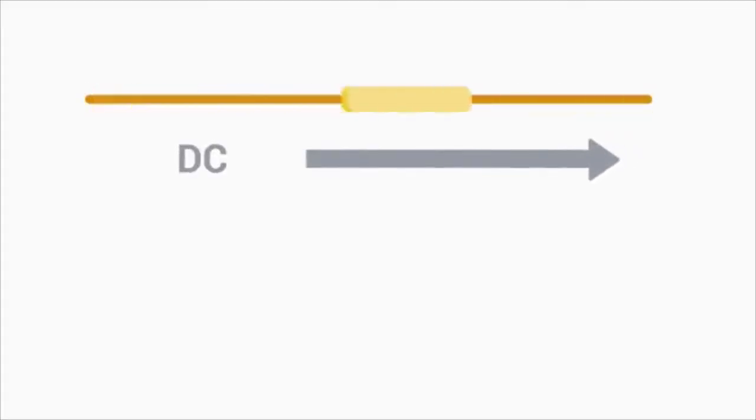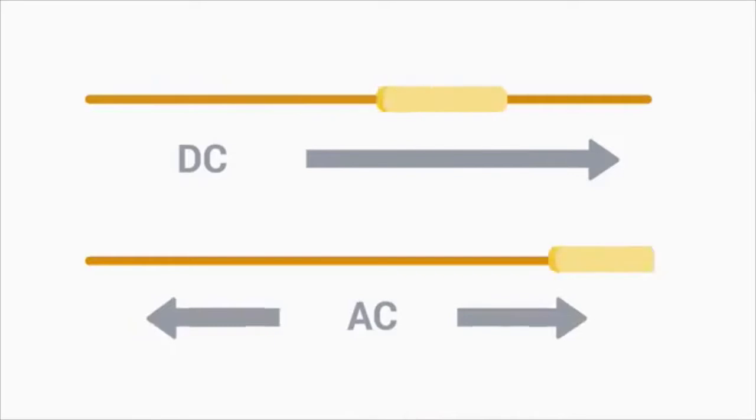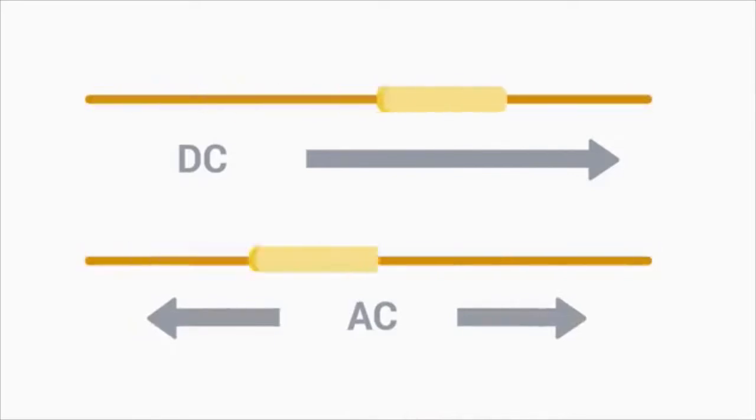In order to get our computer to work, let's give it some power. Computers have a power supply that converts electricity from your wall to something usable. There are two types of electricity: DC, or direct current, which flows in one direction, and AC, or alternating current, which changes directions constantly. Our computers use DC voltage, so we have to convert the AC voltage from our power company to something we can use. That's what our power supply does.